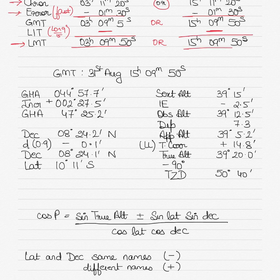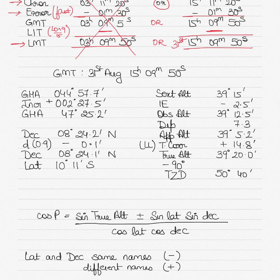The question states it is PM on the ship, so the local mean time must be in the evening. Of the two options, only the second — 15 hours 9 minutes 50 seconds — is in the evening. Therefore, the GMT is 31st August, 15 hours 09 minutes 50 seconds, and that is the time we will use going forward.